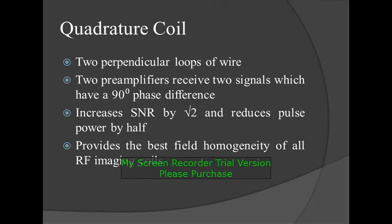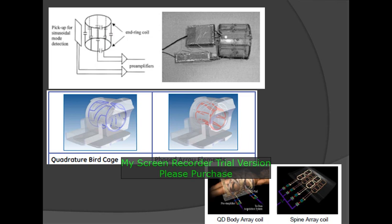Quadrature coil: two perpendicular loops of wires. Two preamplifiers receive two signals which have a 90-degree phase difference. This increases the SNR by a factor of root 2 and reduces the pulse power by half. It provides the best field homogeneity of all RF imaging coils. These are the birdcage coil phased array elements, the QD body array coil, and the spine array coils.